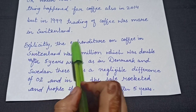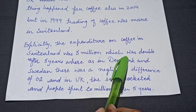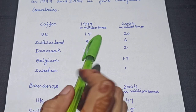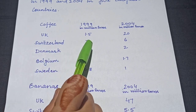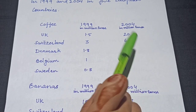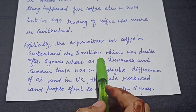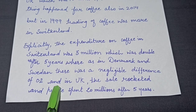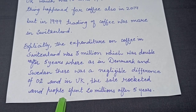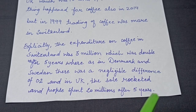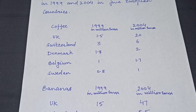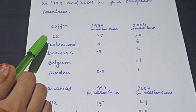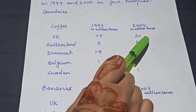Now explicitly: "The expenditure on coffee in Switzerland was 3 million, which was doubled after 5 years. Whereas in Denmark and Sweden there was a negligible difference of 0.2. And in UK, the sale rocketed from 1.5 to 20 million after 5 years."